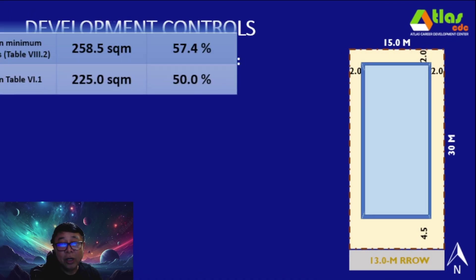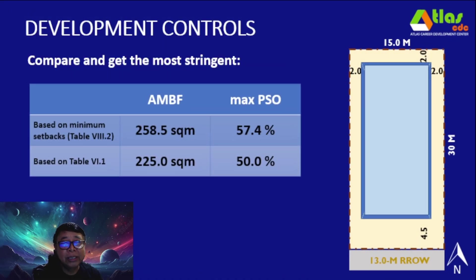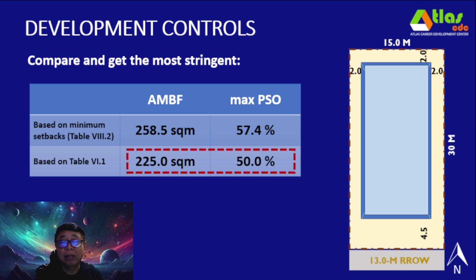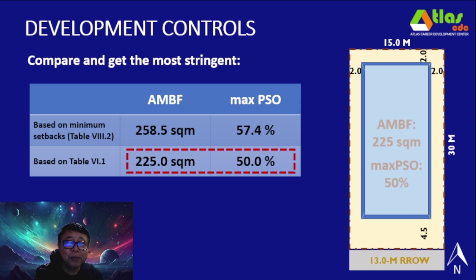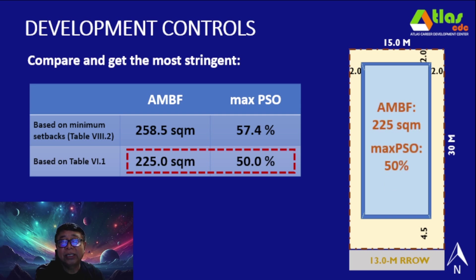The rule is to compare and get the most stringent. Looking at the values derived using the minimum setbacks versus Table 7.1, the most stringent is based on Table 7.1. So our final maximum PSO is 50% of the TLA, and the AMBF will be 225 square meters. Since this is smaller, it means your setbacks can be bigger than the minimum setbacks.